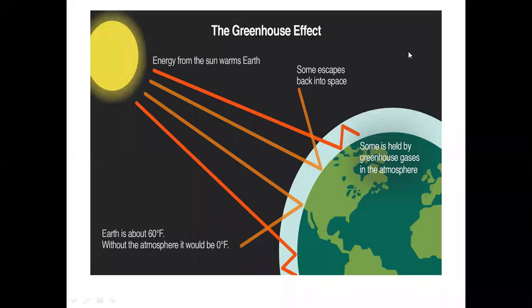Okay students, we will start with the EV topic of PT1, that is greenhouse effect. Now, what is greenhouse effect? You have read in lower classes also. As the sun's rays enter into the Earth's atmosphere, some of these rays, many of them are reflected back — as you can see, they escape back into the space.